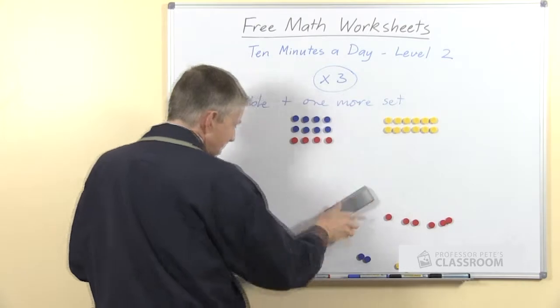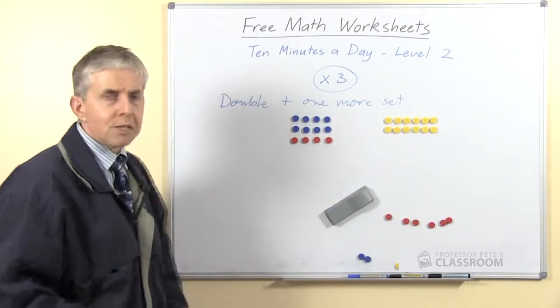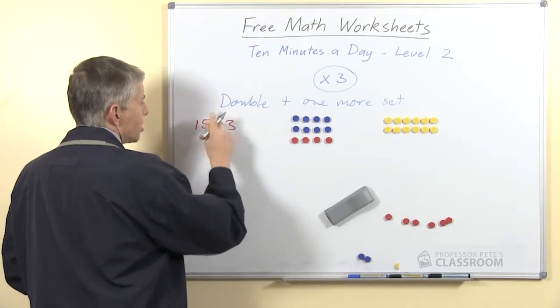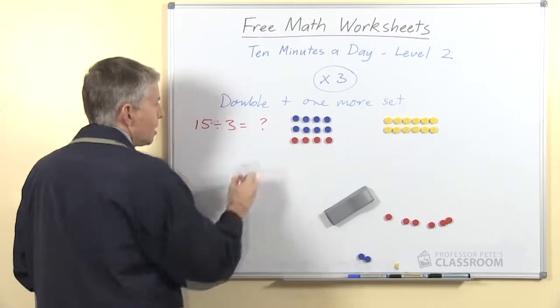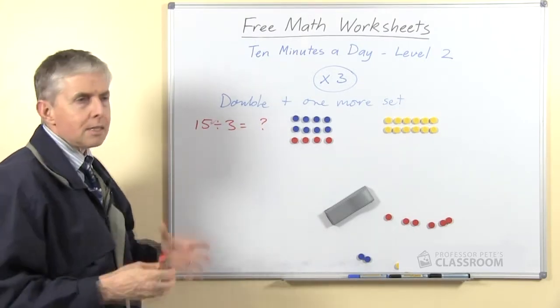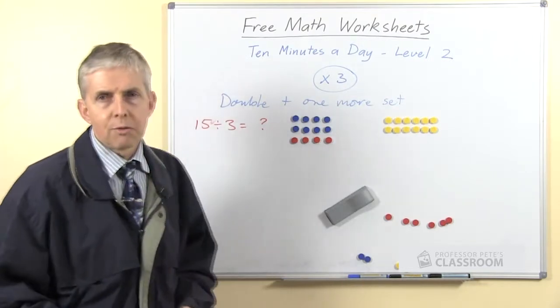So that's how we do the multiplication. For division, there isn't a simple division strategy as such. So if we say what's 15 divided by 3, there isn't something you can do to 15 easily to come up with 3, except to remember the multiplication number factor.